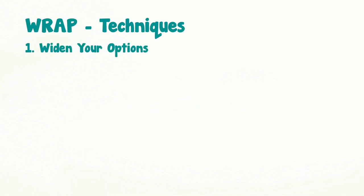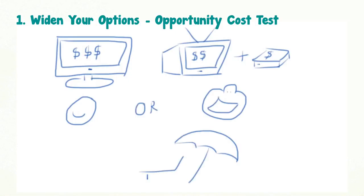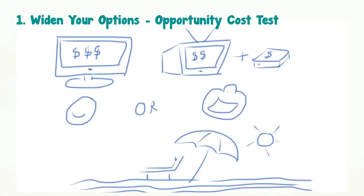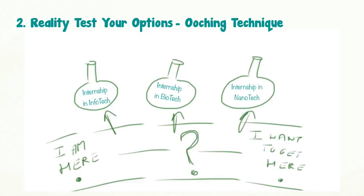For each step in the process, they suggest simple techniques. For example, to widen your options, you can take the opportunity cost test. Say you have decided to buy a television and there are several options at different prices. You can ask yourself if you buy the cheaper set, can you then also buy an Apple TV and if that choice will give you more entertainment. Or you could ask yourself if instead of buying a television, should you take a vacation with that money. For overcoming confirmation bias, you can apply the Ooching technique — run a small experiment to test your theory. For example, students can do several internships to have a better idea of where their interests lie, which will also help them make a wiser choice about which college to choose.